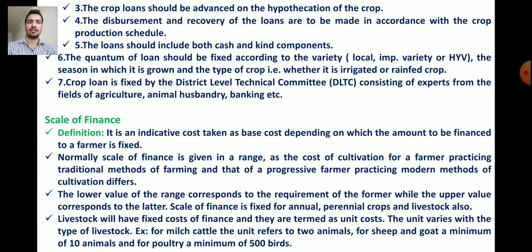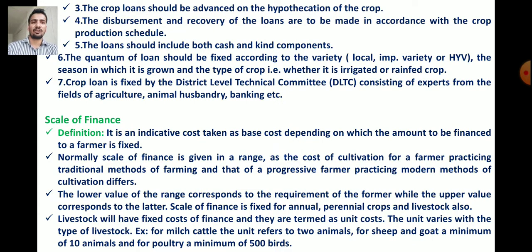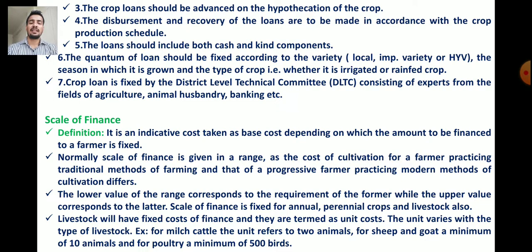Fourth, the disbursement and recovery of the loans are to be made in accordance with the crop production schedule — disbursement means advancing the loan and recovery means repayment, both according to the crop production schedule. Fifth, the loan should include both cash and kind components. Sixth, the quantum of loan should be fixed according to the variety — locally improved or high yielding varieties — the season in which the crop is grown, and the type of crop, whether irrigated or rainfed.